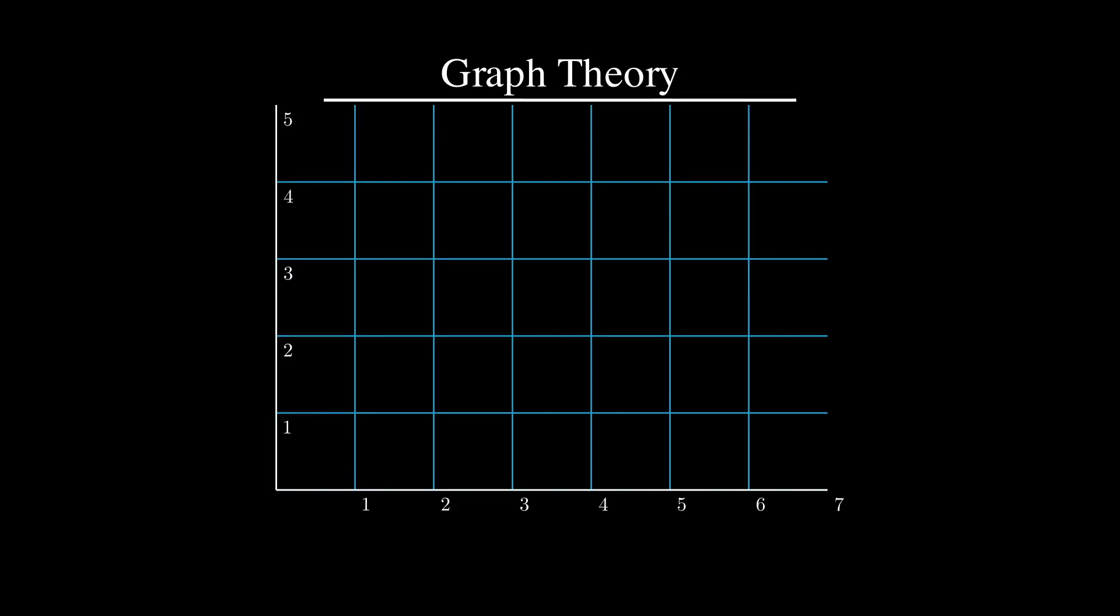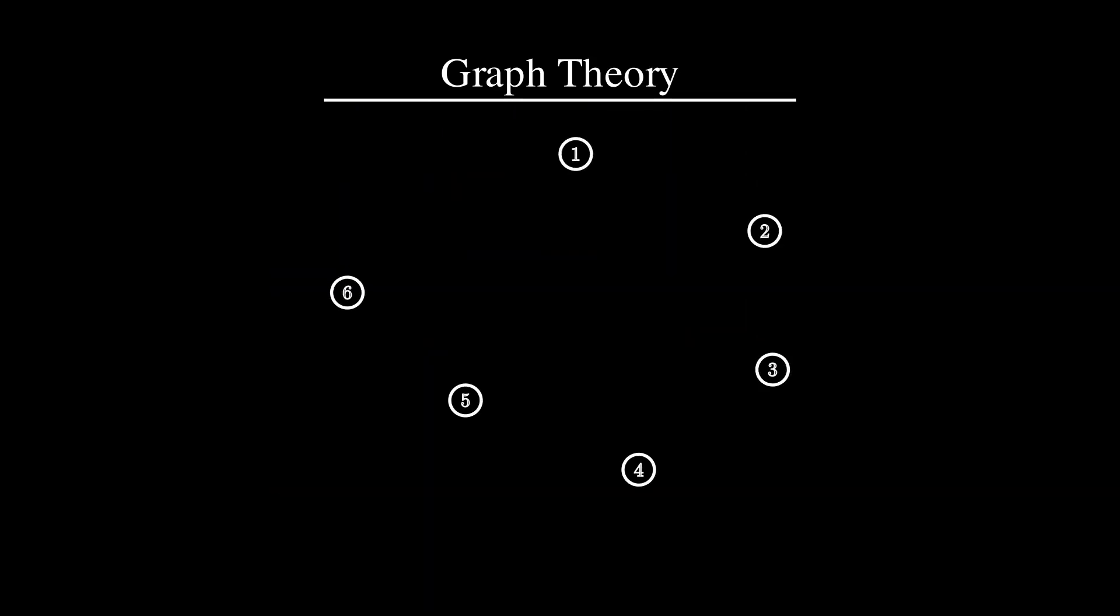Graph theory is a branch of mathematics that studies graphs. Well, not that type of graph. Graph here refers to a structure that describes relationships between a set of objects, often represented as shown here, a set of vertices connected by edges.